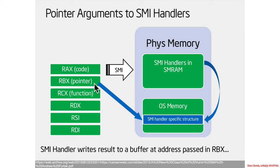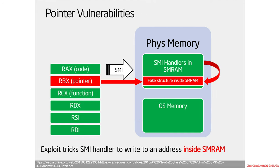If you imagine they're passing around pointers, those pointers point to some memory. The person outside of SMM won't know where anything is in SMRAM because they can't see it, so they'll be pointing at data structures in operating system memory. The SMI handler may read from or write to that data. If the SMI handler just naively writes wherever an attacker-controlled pointer says, and the attacker points it inside SMRAM, they could be clobbering themselves in SMRAM — writing a single byte to change configuration data, or changing SM base in the save state area.